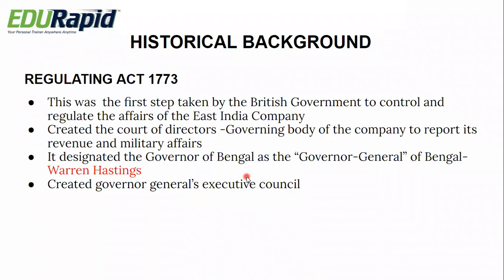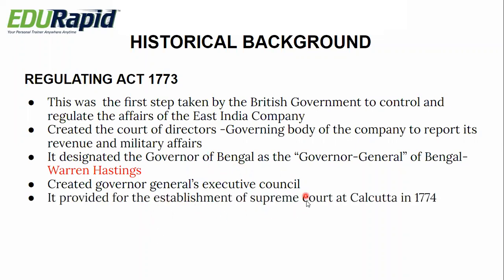The study of historical background shows how the phase changed from Executive Supremacy to Legislative Supremacy. The Regulating Act also provided for the establishment of the Supreme Court at Calcutta in 1774. This is an important examination point: the Supreme Court at Calcutta was established through the Regulating Act of 1773. These are the important provisions of the Regulating Act 1773.